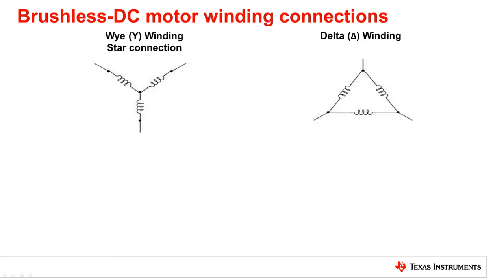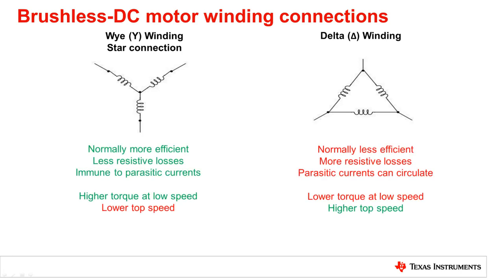Now let's look into the three phases of BLDC motor windings. BLDC motor construction can vary in winding connection of its three motor phases. Shown on the left is the Y winding or star connection, which is the most common winding used for BLDC motors. On the right is the delta winding connection. The Y winding naturally is more efficient, has less resistive losses, is more immune to parasitic current, and has higher torque at lower speeds. Whereas the delta winding's main advantage is higher top speed.